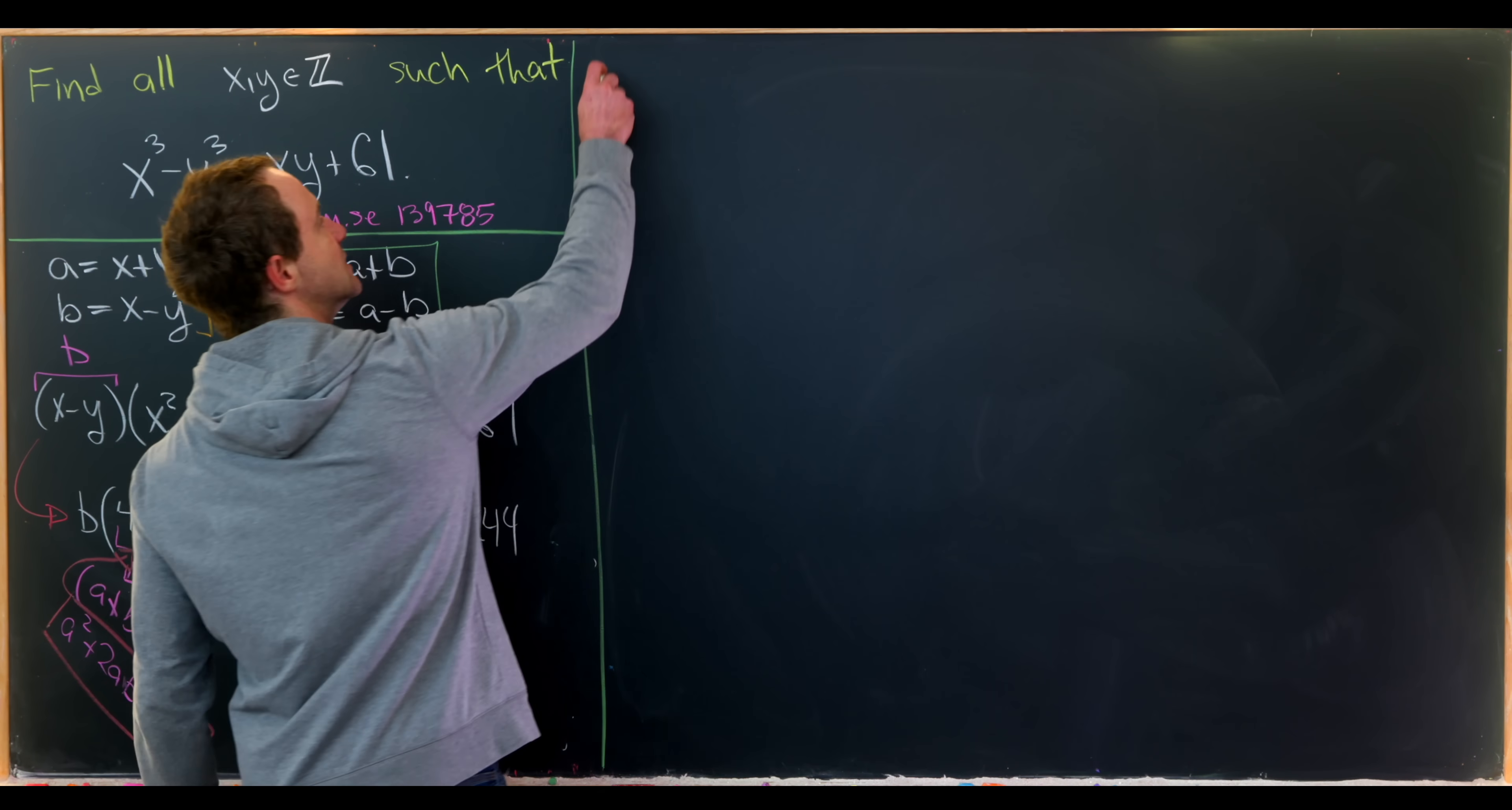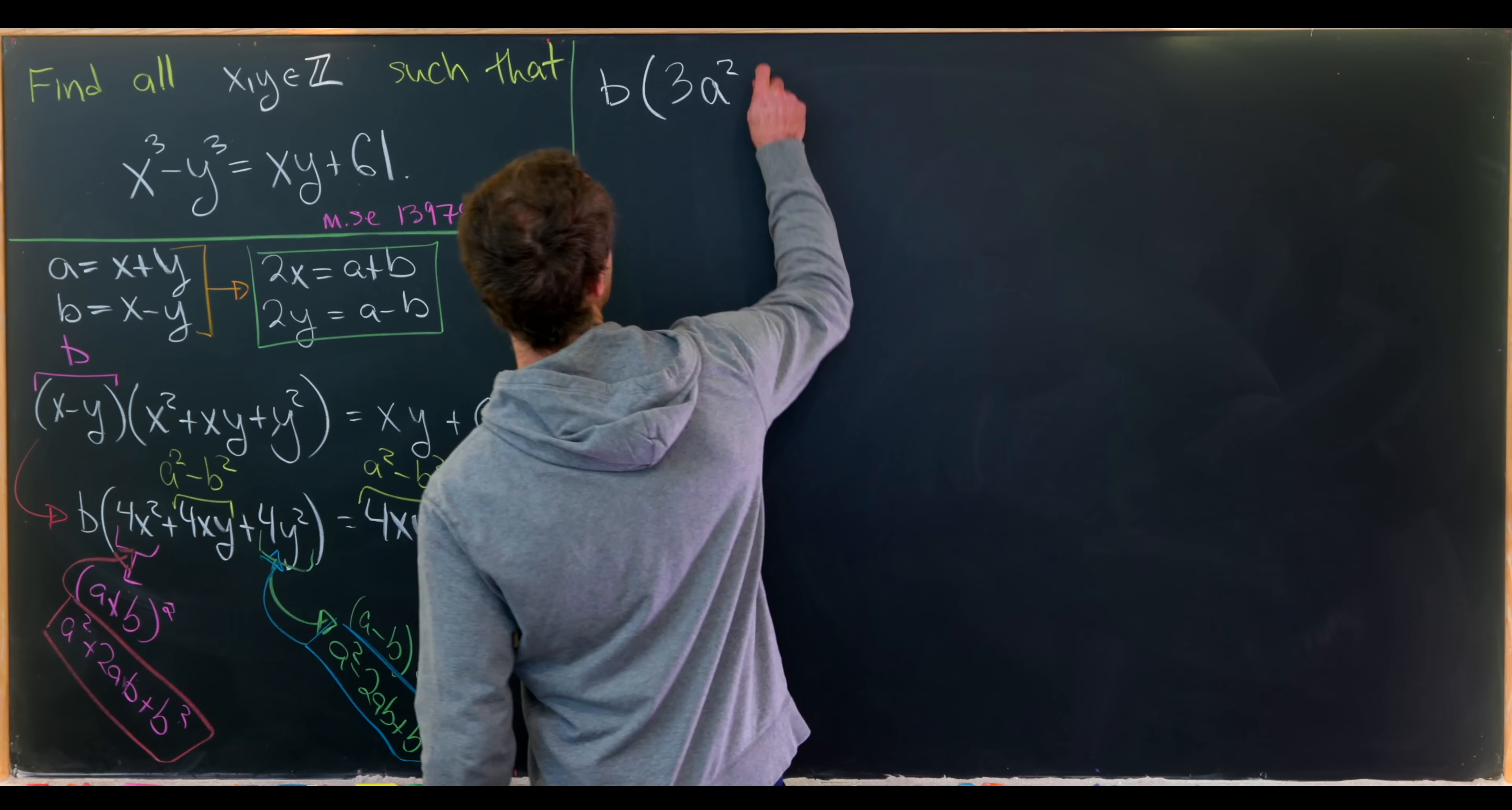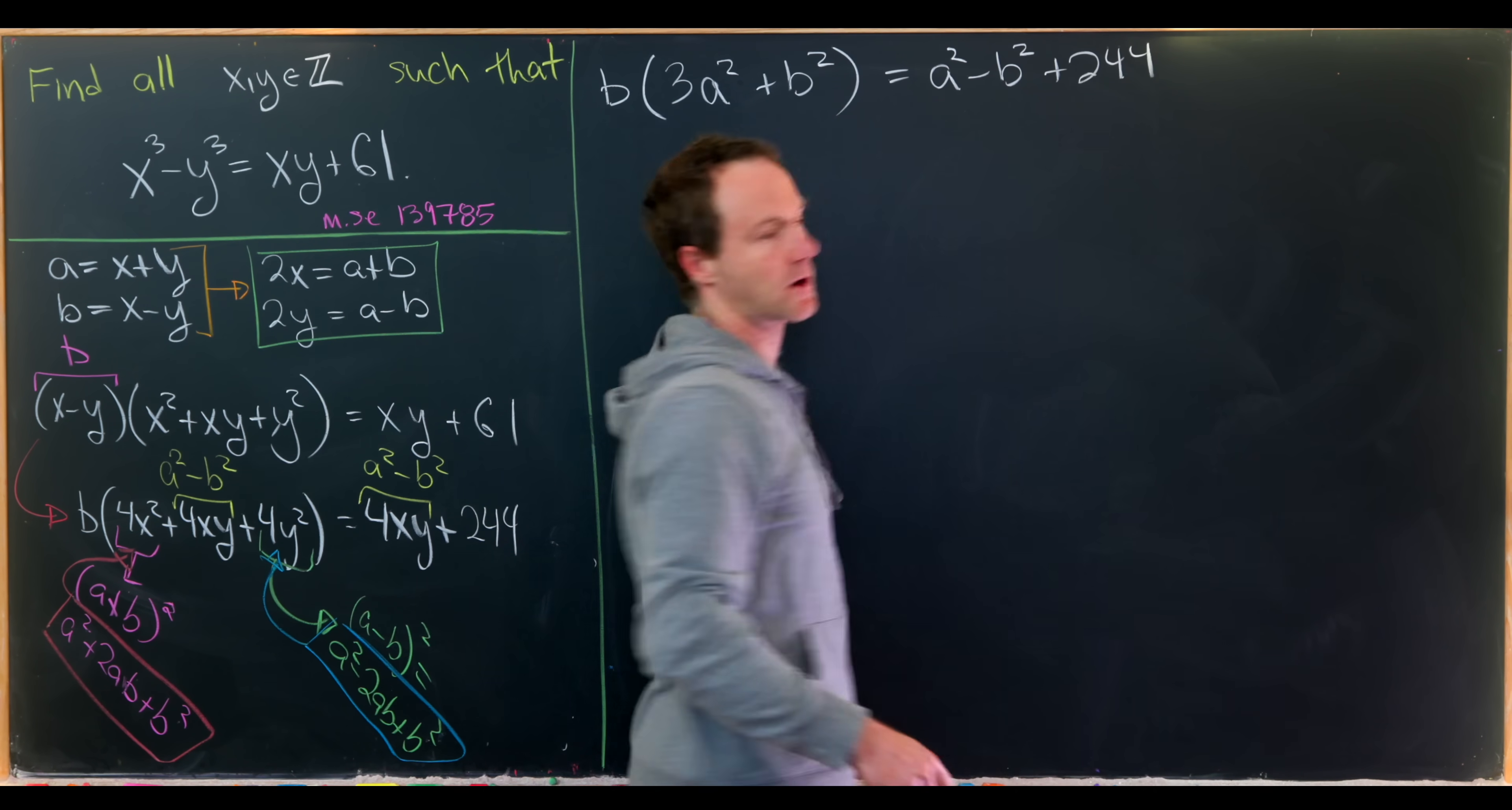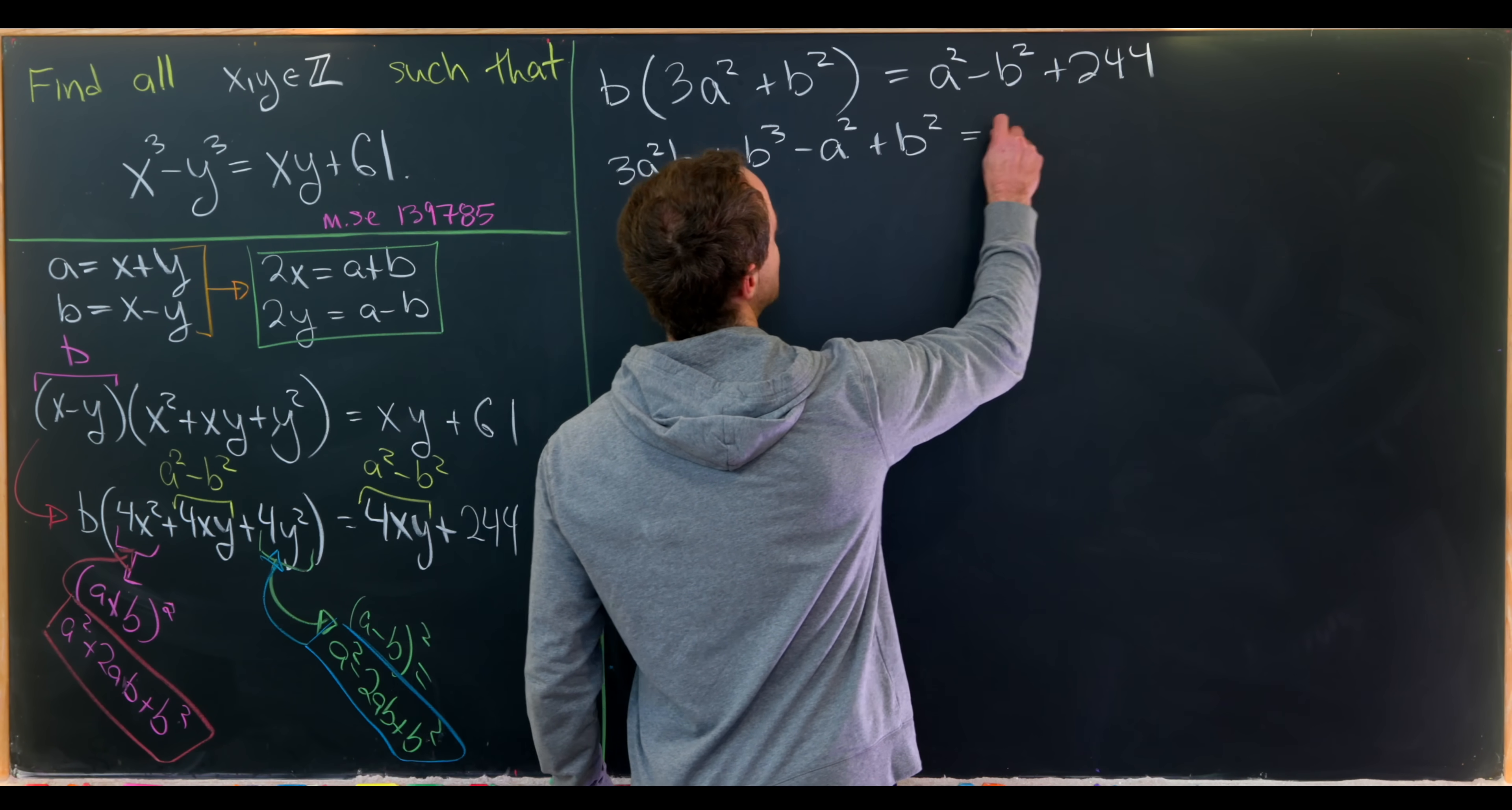So let's see how this simplifies. We have ab and then notice we have a squared plus a squared plus a squared, so that gives us 3a squared. Then we have 2ab minus 2ab so that cancels. And then b squared plus b squared minus b squared gives us plus b squared. On the right hand side we have a squared minus b squared plus 244.